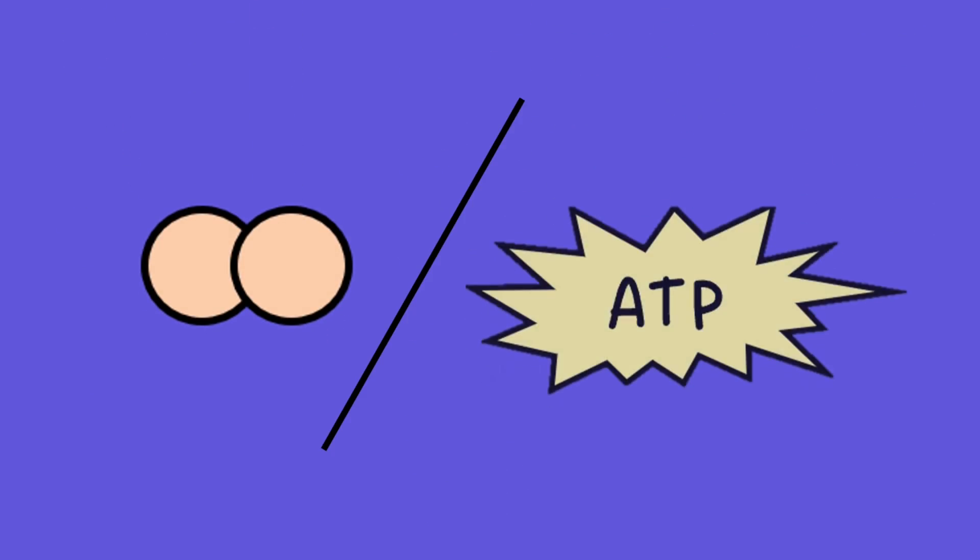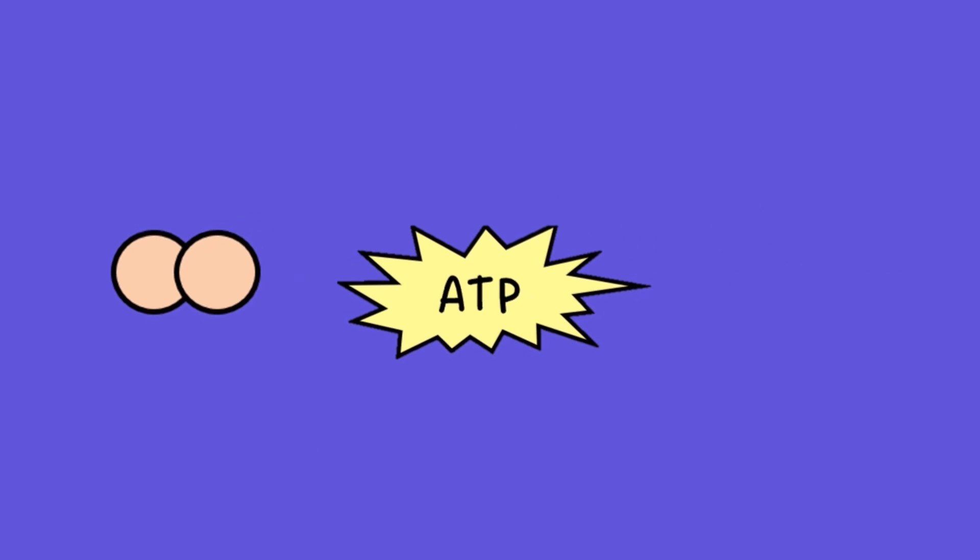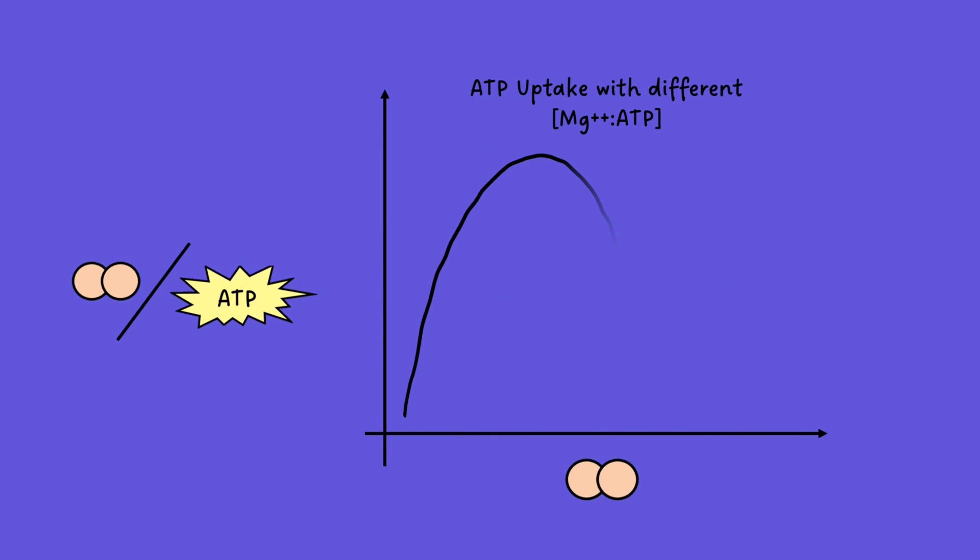Regarding the enzyme's optimal conditions, they also found that manipulating the magnesium ion to ATP concentration ratios affected the enzyme, and excess or deficiency of magnesium ions inhibited the reaction, highlighting their significance as cofactors.